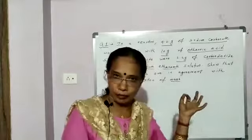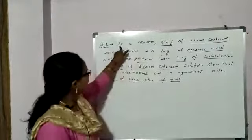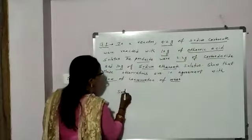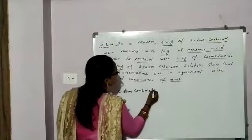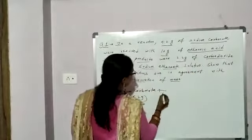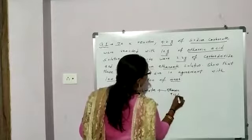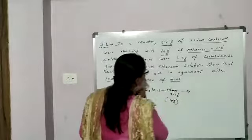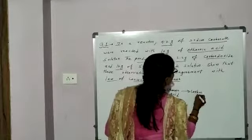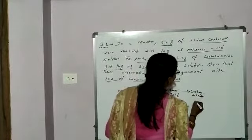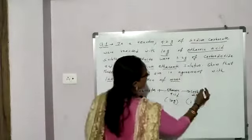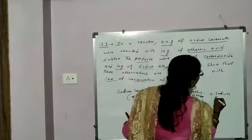In a reaction, 4.2 grams of sodium carbonate reacted with 10 grams of ethanoic acid. The products were 2.2 grams of carbon dioxide and 12 grams of sodium ethanoate.